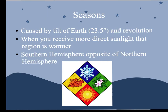Seasons! We've got all four here in Virginia. The seasons are caused by the tilt of the Earth, which is 23.5 degrees, and by the revolution of the Earth. When you're receiving more direct sunlight, that region is warmer — that gives you summertime. When you're receiving less direct sunlight, it's colder and you get wintertime. The southern hemisphere and northern hemisphere are completely opposite each other.